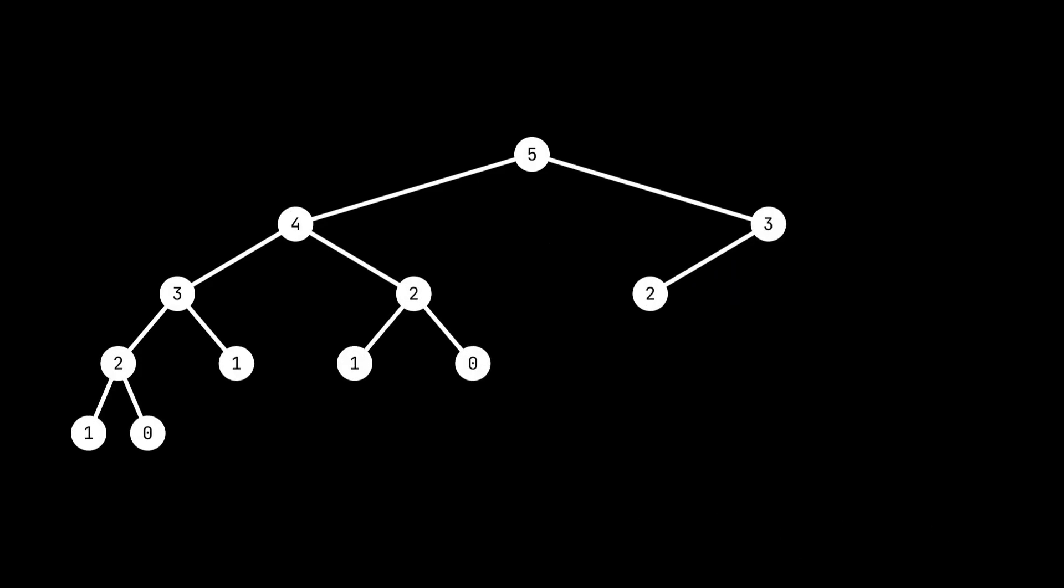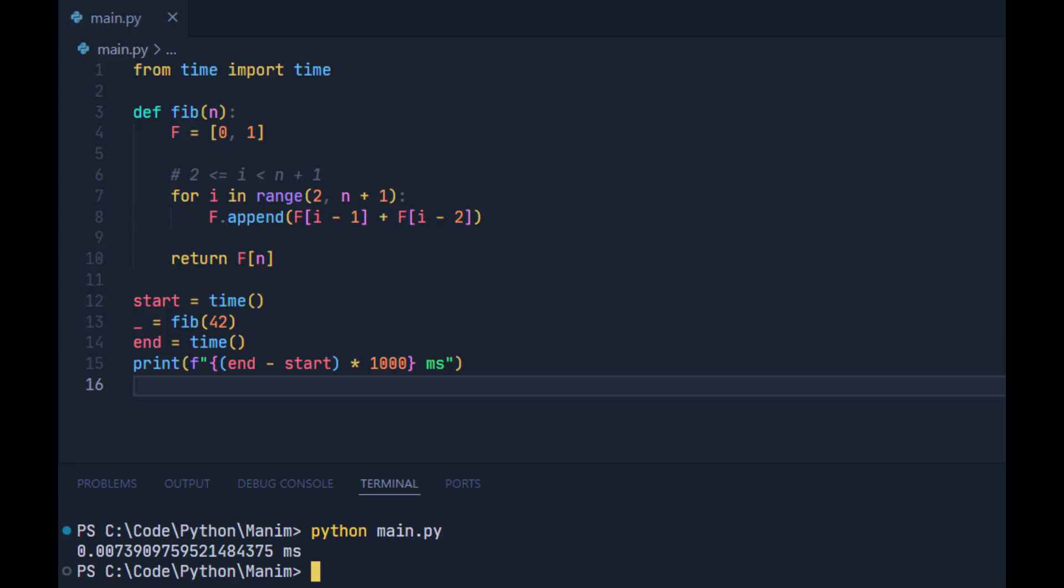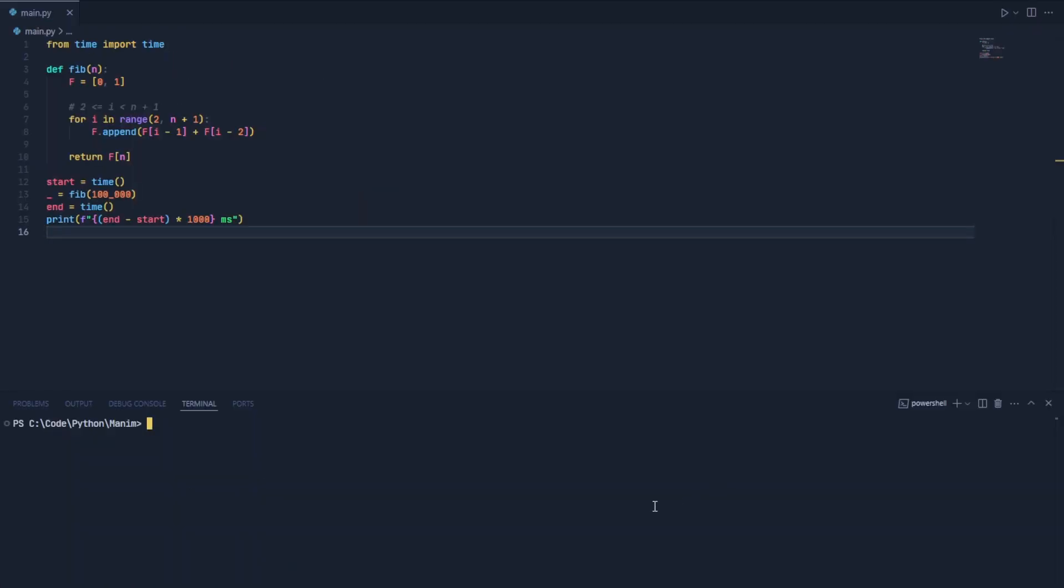To combat this rookie mistake, we ditch recursion and adopt an iterative solution where we store the whole sequence in a DP array. This way, we always have instant access to the previous two numbers required to calculate the next number in the sequence. This easily gets us to the 100,000th Fibonacci number, but there is still one more optimization we can make.